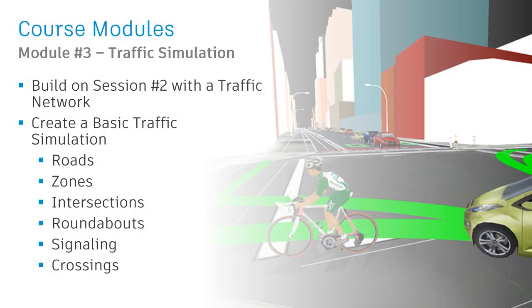We're going to build on what we learned in session two with pedestrian simulations, now adding a traffic network. We're going to create a basic traffic simulation. In the process of that, I'm going to go through roads, zones, intersections, roundabouts, a little bit about signalling, and we're also going to look at crossings where we start to see how we can get an interaction between the pedestrians and the cars.